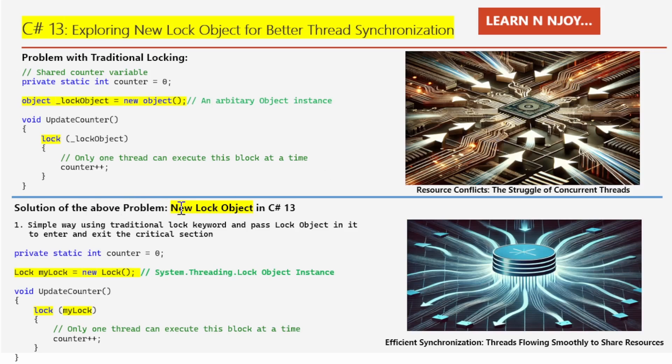The solution: the new lock object in C# 13. With C# 13, we have a more flexible and efficient way to handle thread synchronization using the new lock object. It offers a cleaner API for locking and unlocking shared resources, making it easier for developers to prevent conflicts between threads. When a thread wants exclusive access to a critical section of code, it first enters the lock. Once inside, no other thread can access that section until the lock is exited.